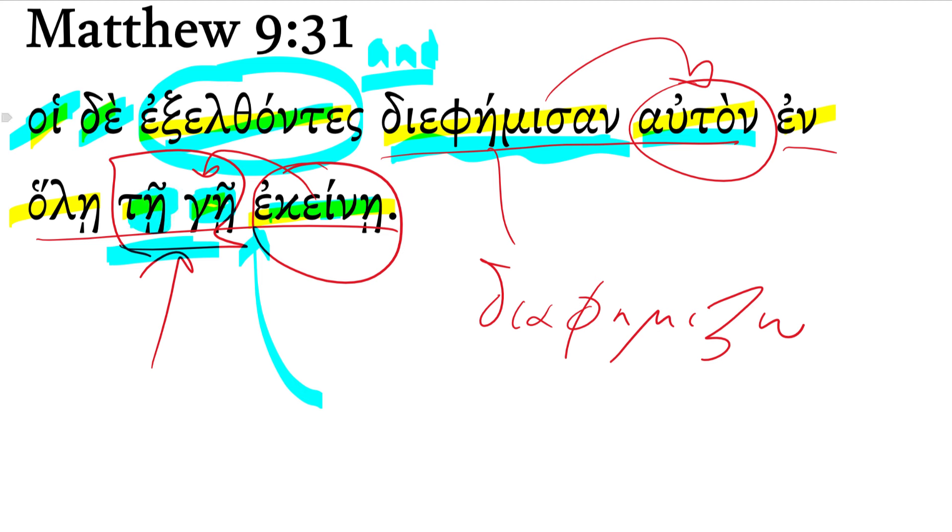Let's also look at this participle here, exelthontes. That's just from the lexical form exerchomai—exerchomai, to go out. Remember the second aorist of erchomai is aelthon, so the second aorist of exerchomai is exelthon. That would be 'I went out' or 'they went out.'